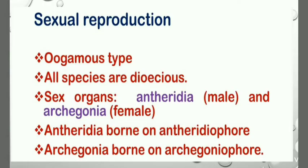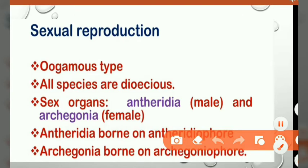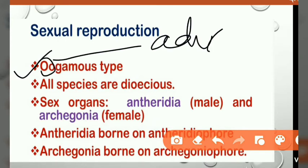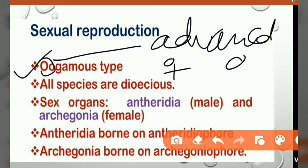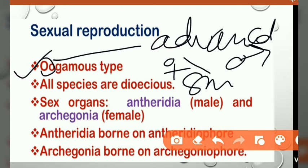In sexual reproduction, Marchantia is oogamous type. Oogamous means it is an advanced type where the male gamete is small but motile — motile means they have flagella, which may be uniflagellate, biflagellate, or multiflagellate. The female gamete is larger in size but non-motile, meaning it has no flagella.